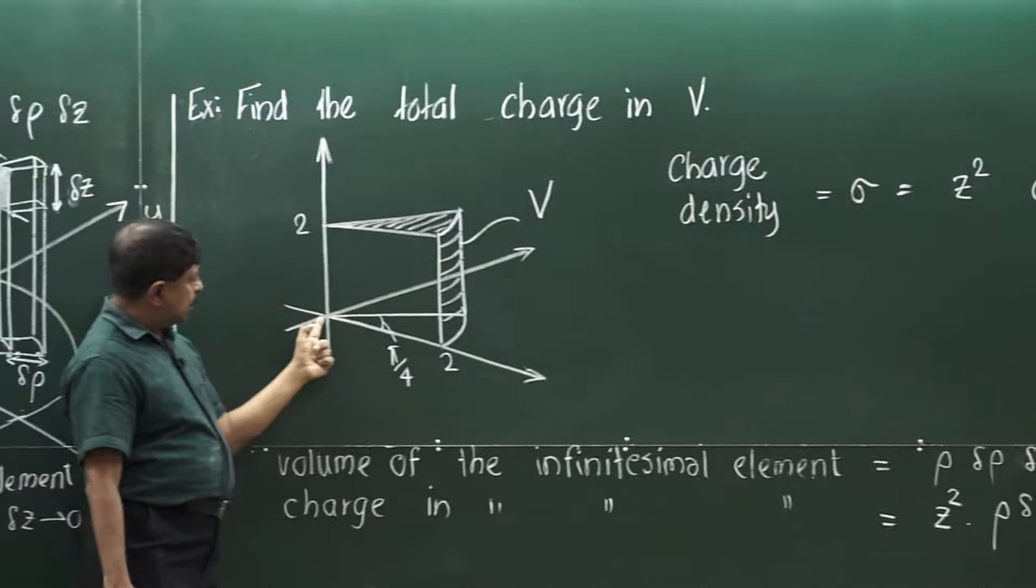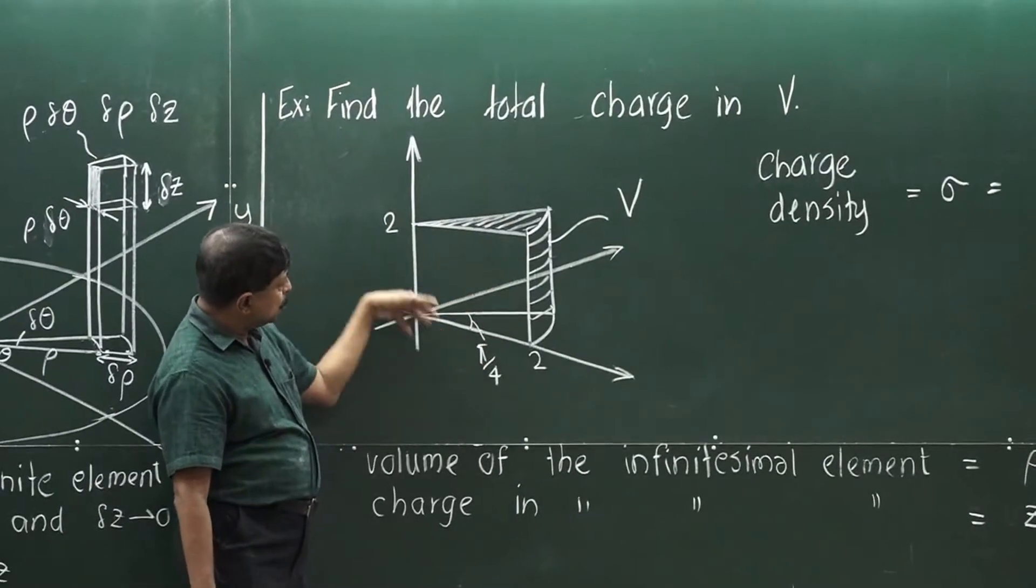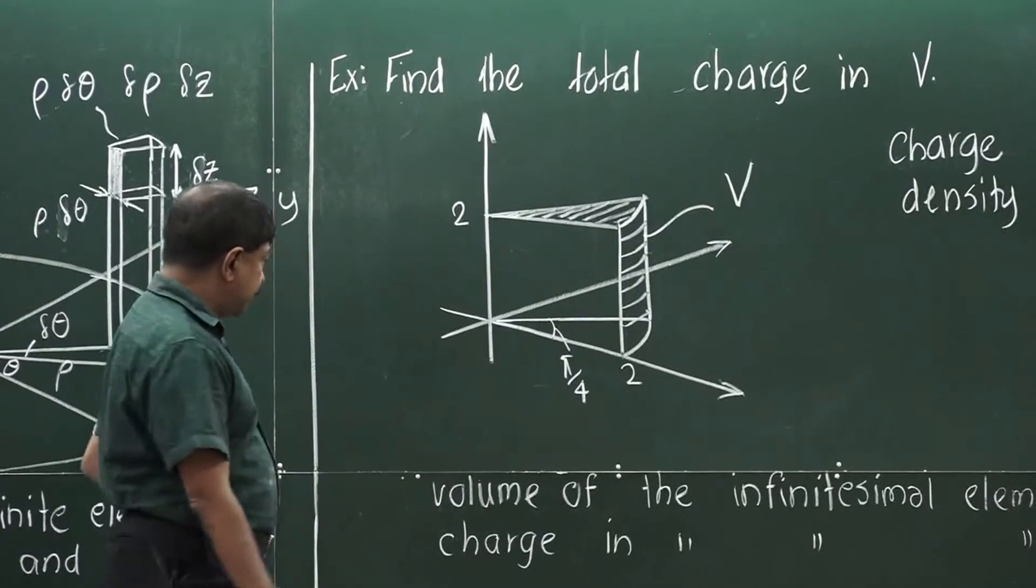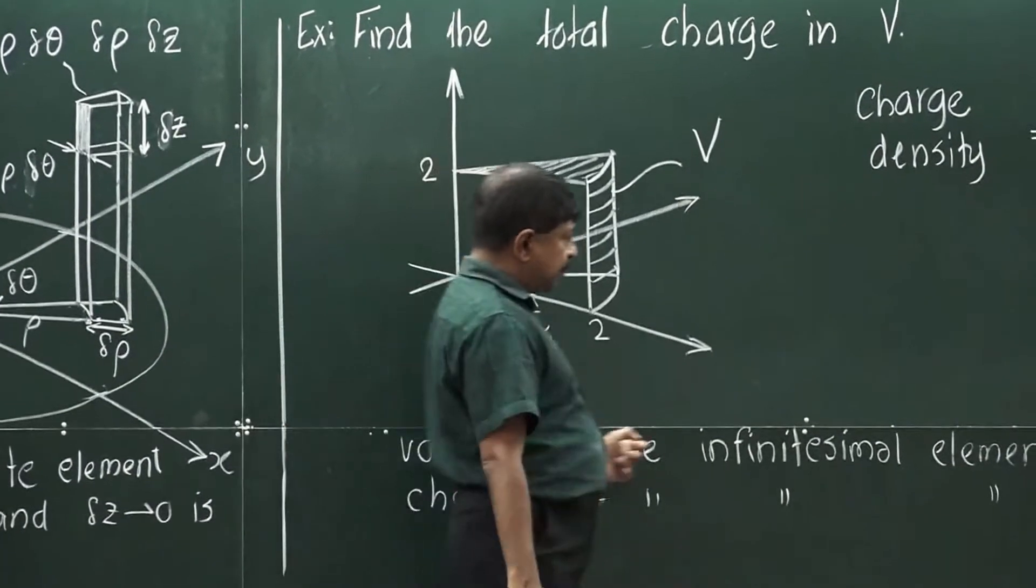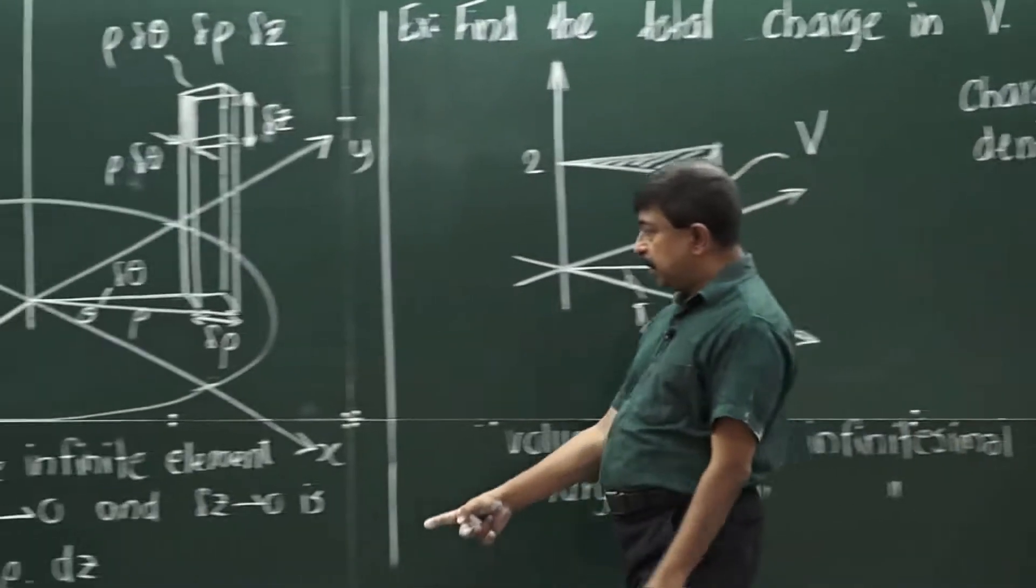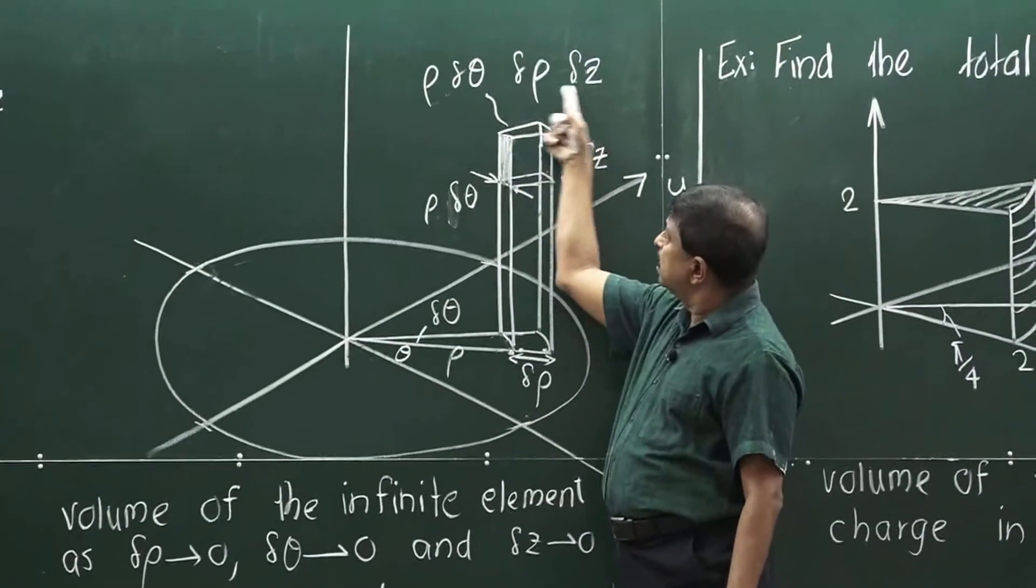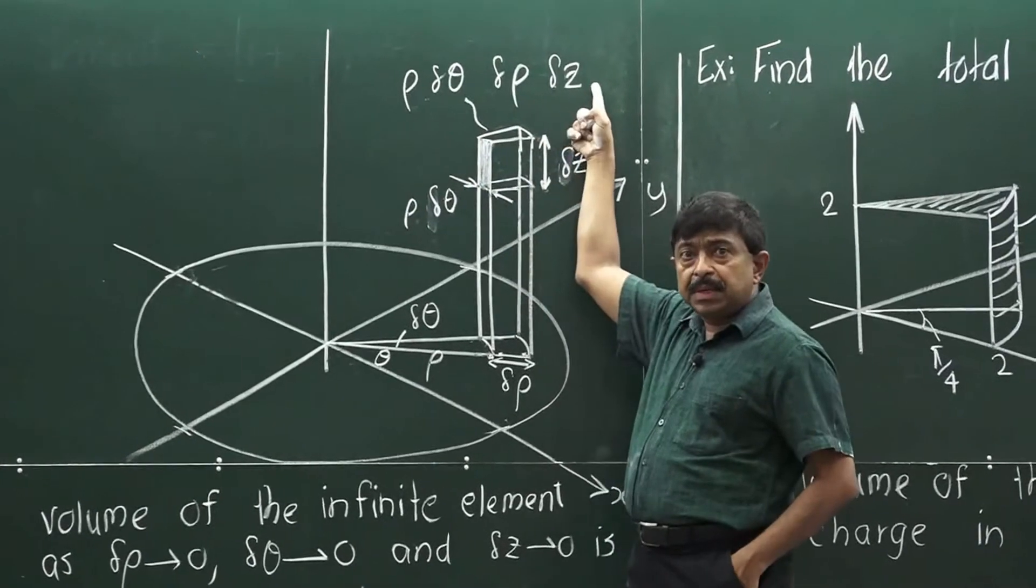This is the portion of a cylinder. Therefore, we have to use cylindrical polar coordinates. The volume of the infinitesimal element as we know, as we saw earlier from this one, the volume of the infinitesimal element is this.